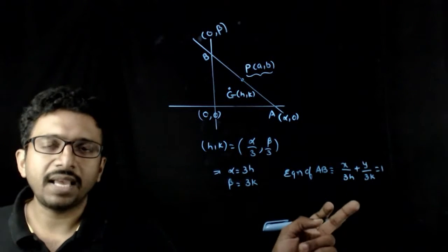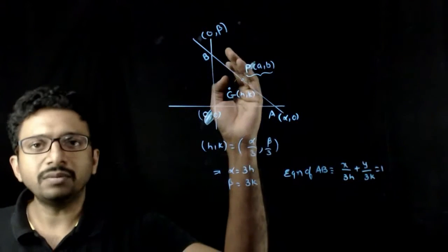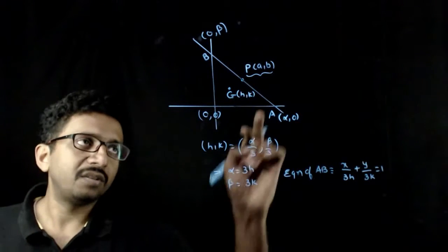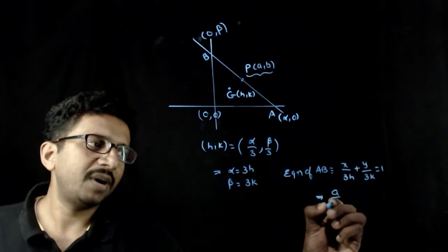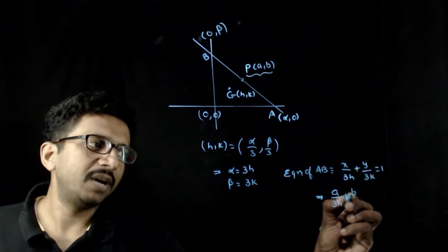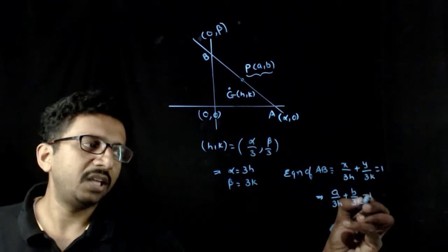And now this line has to pass through the point a comma b, that is the condition. If this line has to pass through a comma b, this implies a by 3H plus b by 3K has to be equal to 1.